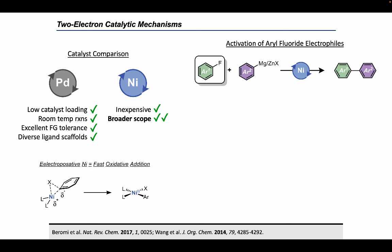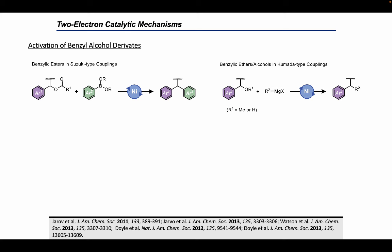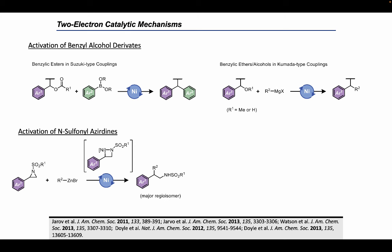For example, aryl fluorides have been demonstrated to be competent electrophiles in Negishi and Kumada couplings. In the first example from the scope of this Negishi reaction, we see that the coupling of 4-fluoroanisole with prenyl zinc chloride gave excellent yields under nickel catalysis and only trace product with palladium. Furthermore, nickel can undergo oxidative addition with benzylic esters, ethers, and even alcohols in Suzuki and Kumada-type couplings. A very unique example is found in the Negishi coupling with aziridines as electrophiles.